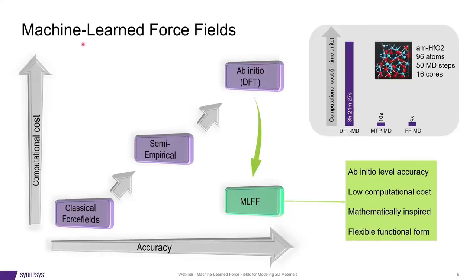This is where machine-learned force fields come into the picture. We have a simple graph with accuracy along the x-axis and computational cost along the y-axis. Density functional theory offers very high accuracy in general, but it is very expensive for large system sizes. Classical force fields are very efficient for large system sizes, but not as accurate as DFT. Machine-learned force fields bring the best of both worlds, offering near DFT accuracy at the cost of classical simulations.